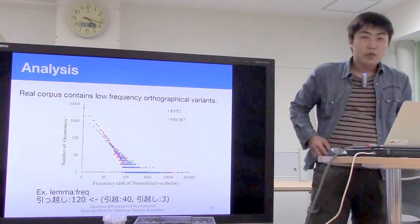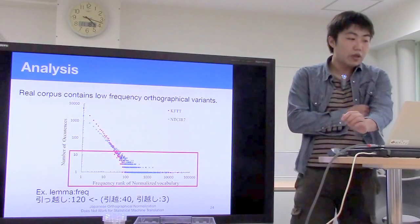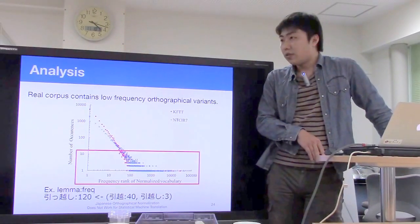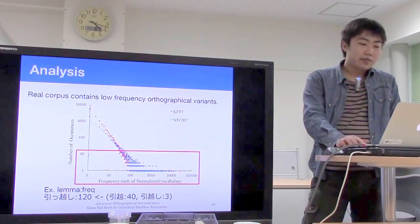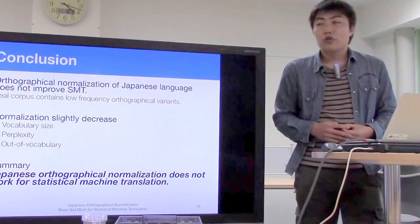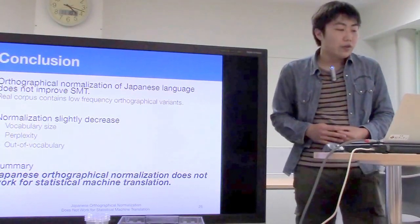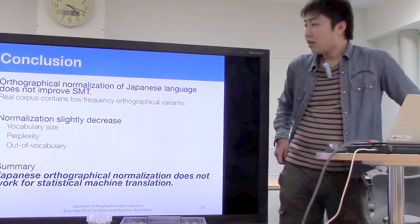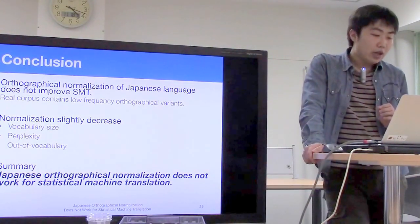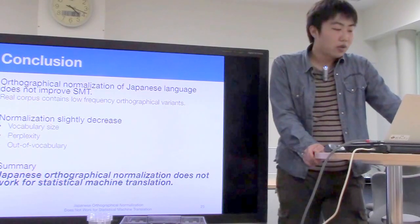We analyzed why normalization does not work well. This graph shows that a real corpus contains low-frequency orthographical variance, so normalization does not work well. To conclude, our investigation shows orthographical normalization of Japanese does not improve SMT quality, because real corpora contain low-frequency orthographical variance. However, normalization slightly decreases vocabulary size, perplexity, and out-of-vocabulary rate. In conclusion, Japanese orthographical normalization does not work for statistical machine translation.